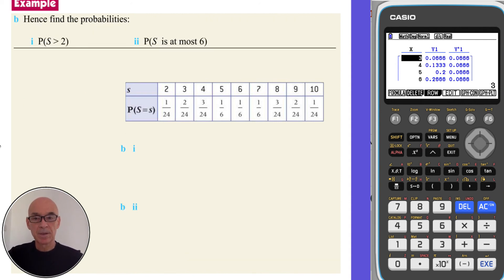To find the probability that S is bigger than 2, we simply add all those probabilities. Or alternatively, we can use our complement rule. So the probability that S is bigger than 2 is found by subtracting 1/24 from one whole. And that gives 23/24. To find the probability that S is at most 6, we simply add the respective probabilities. And that's equal to 7/12.